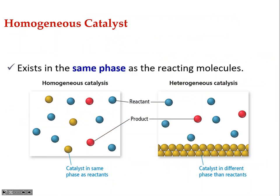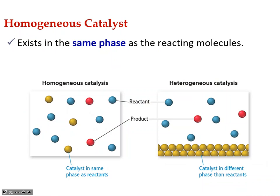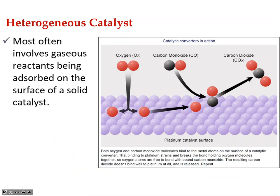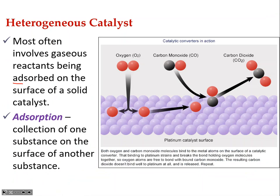Homogeneous catalysts exist in the same phase as the reactants — if reactants are liquids, the catalyst is a liquid; if gases, the catalyst is a gas. Heterogeneous catalysts are in a different phase — most often gaseous reactants are adsorbed onto the surface of a solid catalyst. Adsorption is the collection of one substance on the surface of another.